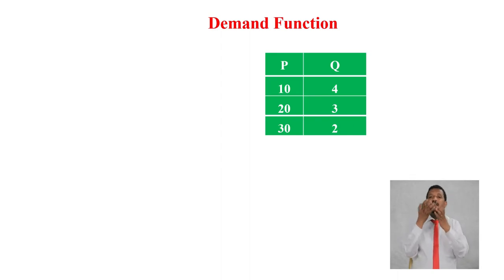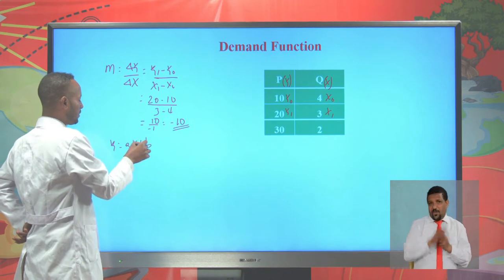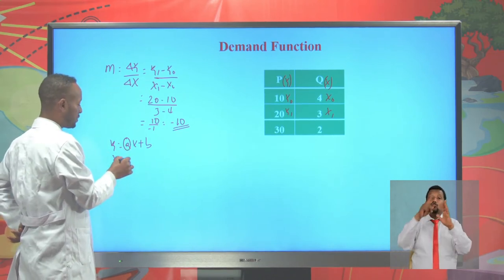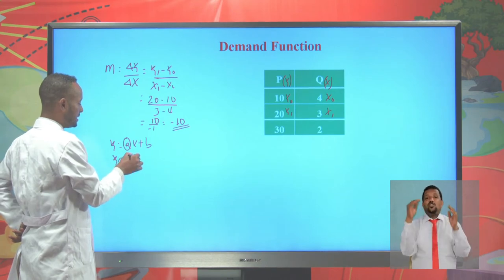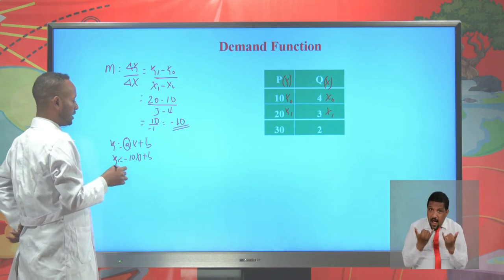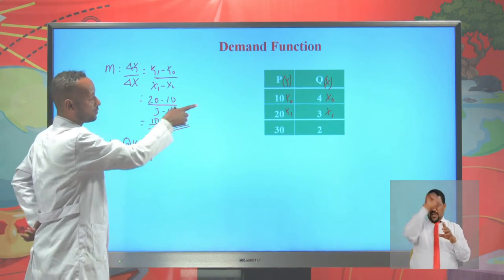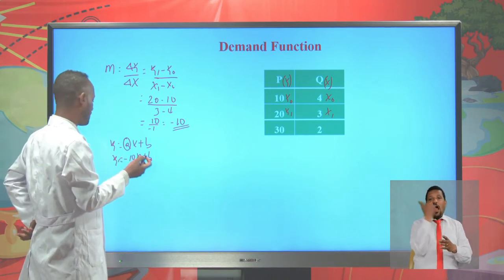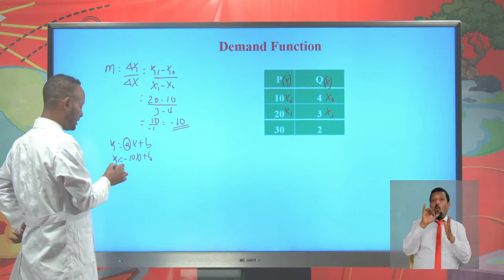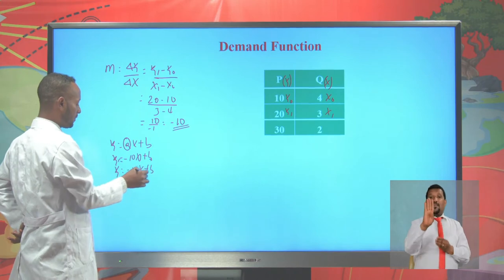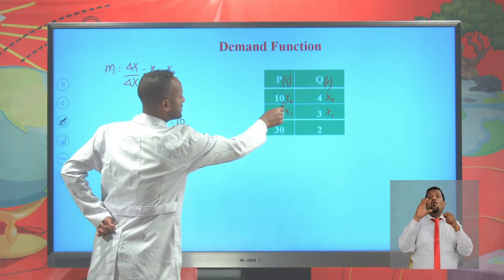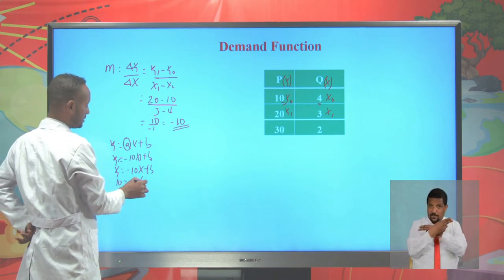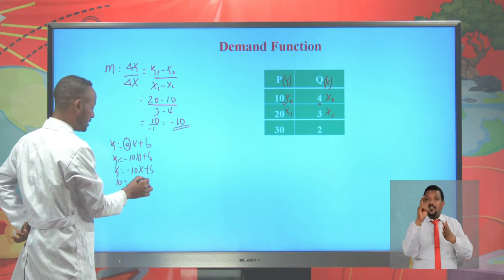For a linear equation represented in the form y = ax + b, the coefficient of variable x represents the slope. From this, since the slope is −10, we have y = −10x + b. To find the y-intercept b, we take any coordinate from the schedule — for example, 10 and 4, or 20 and 3, or 30 and 2. Taking the first coordinate where y = 10 and x = 4, we substitute: 10 = −10(4) + b.